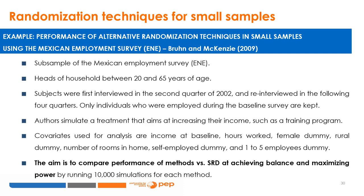The authors simulated a treatment that aims to increase household head income, such as a training program. Covariates used for analysis include income at baseline, hours worked, female dummy, rural dummy, number of rooms in the home, self-employed dummy, and one-to-five employees dummy. The aim is to compare the performance of alternative methods versus a single random draw for achieving balance and maximizing power, using 10,000 simulations for each method.